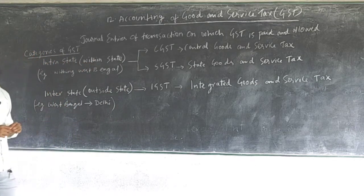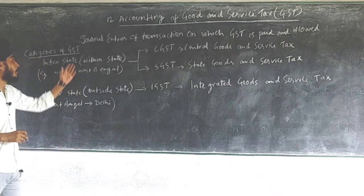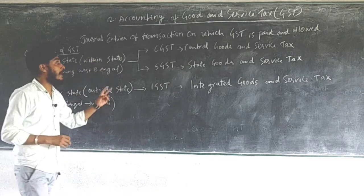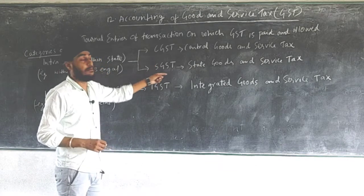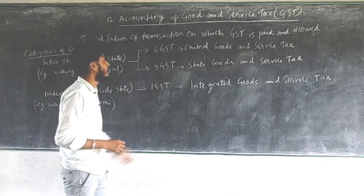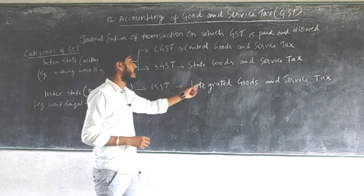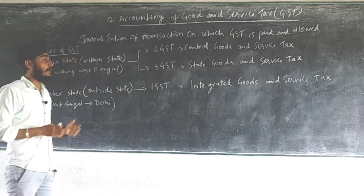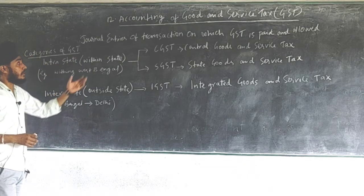First, we will learn some categories of GST. The first category is intra-state — intra-state means when purchase and sales take place within the state. Suppose within West Bengal, then two types of tax are applied: CGST and SGST. CGST stands for Central Goods and Service Tax and SGST stands for State Goods and Service Tax.